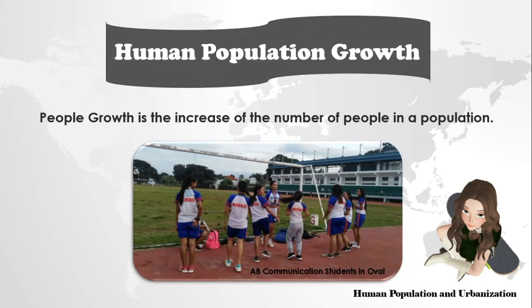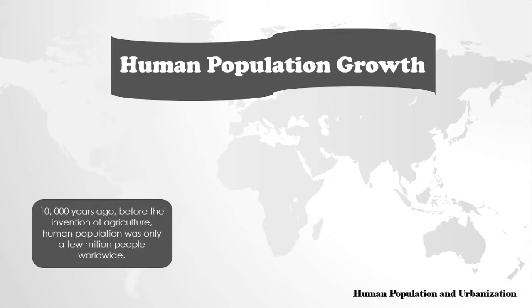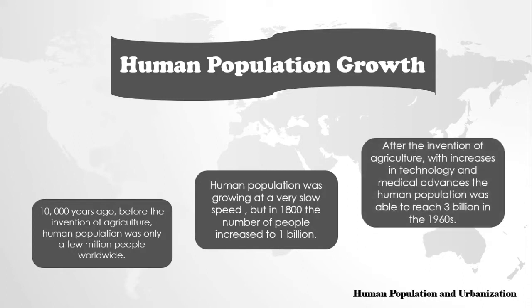Human Population Growth. People growth is the increase of the number of people in a population. For most of human history, our population size was relatively stable, but with innovation and industrialization, energy, food, water, and medical care became more available and reliable. 10,000 years ago, before the invention of agriculture, the human population was only a few million people worldwide. Human population was growing at a very slow speed, but in 1800, the number of people increased to 1 billion. After the invention of agriculture, with increases in technology and medical advances, the human population was able to reach 3 billion in the 1960s. Consequently, global human population rapidly increased and continues to do so, with dramatic impacts on global climate and ecosystems.